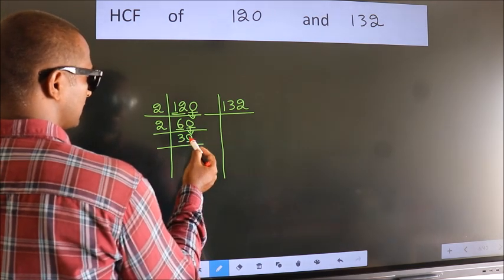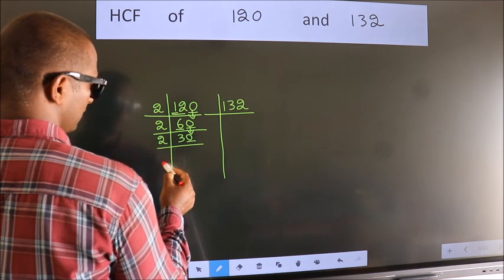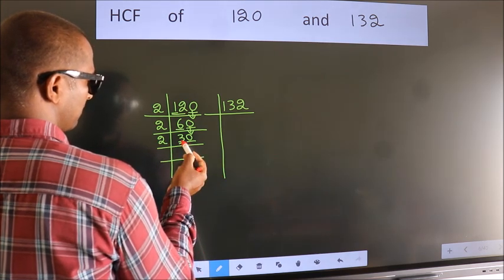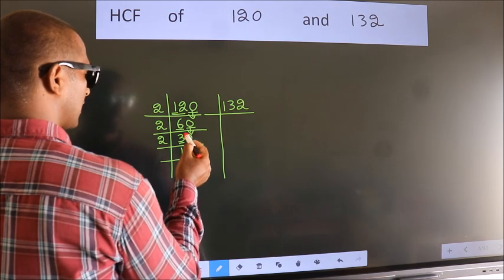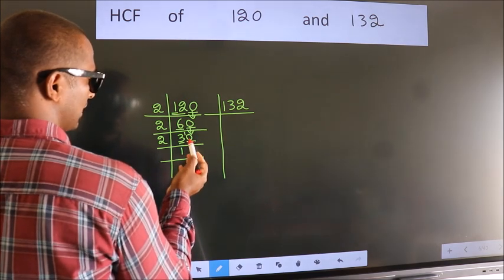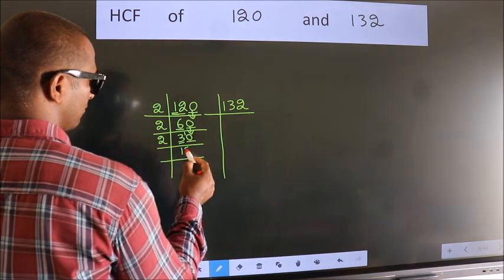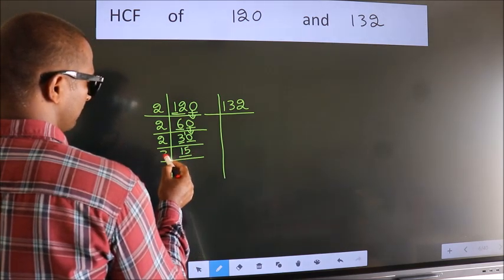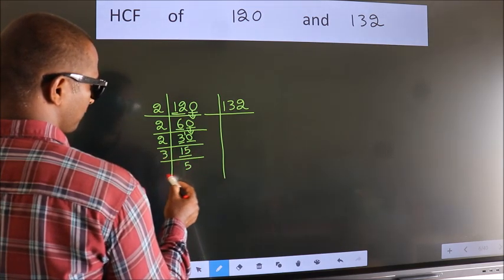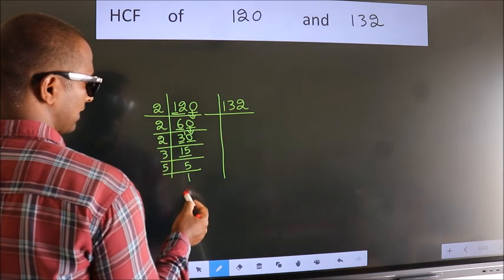Now last digit 0, so take 2. First number 3, a number close to 3 in 2 table is 2, 1, 2. 3 minus 2, 1, 1 carried forward 10. When do we get 10 in 2 table? 2, 5 is 10. Now 15 is 3, 5 is 15. 5 is a prime number, so 5 once 5.